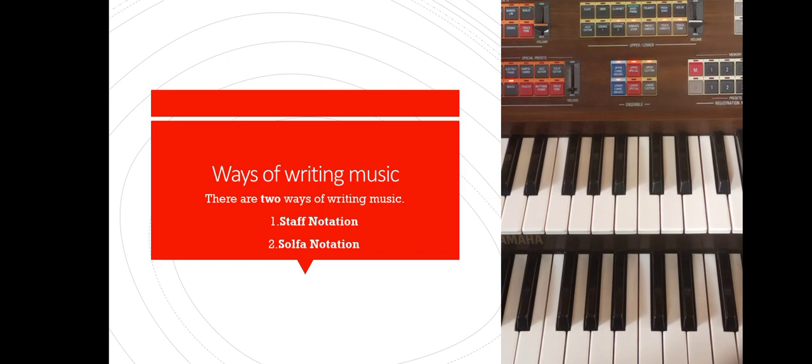We can look at the ways in which people can write music. There are two ways: staff notation and solver notation. But for us, in everything we are going to do here — this is lesson one and we shall have other lessons — we are going to focus on the first one, which is staff notation. Maybe in future lessons we can look at solver notation. But for now, we are doing staff notation. So we can go ahead and define terms used in staff notation.